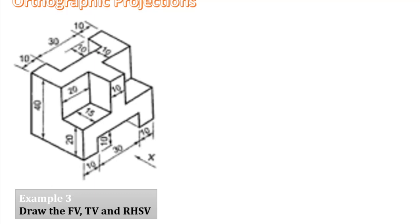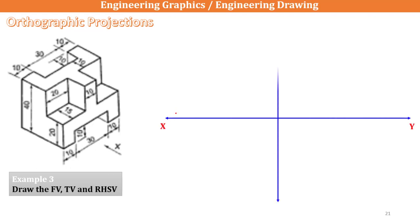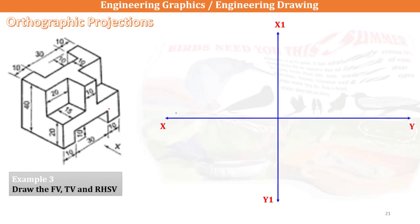We'll go with the next example. They are asking us to draw the front view, top view, and right-hand side view. The basic procedure here is to draw the reference lines, so I will draw the reference lines as XY and X1Y1. The first thing is the front view.